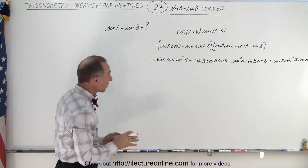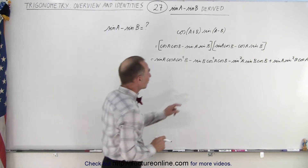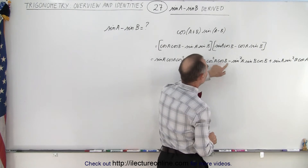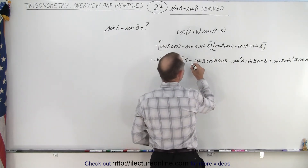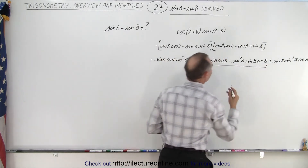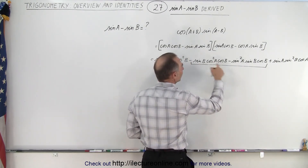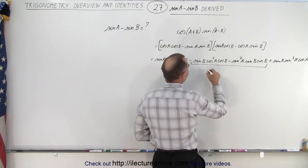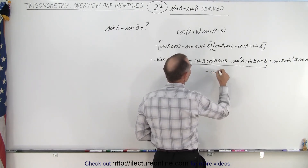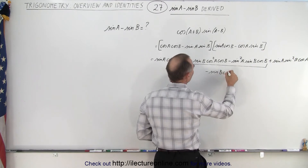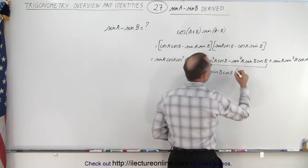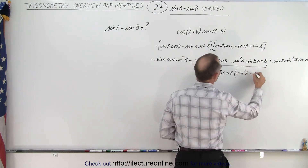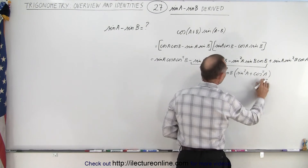Now we're looking for common factors in these terms. We have sine squared a, cosine squared a, sine b cosine b, sine b cosine b. Notice these two terms contain the same factor of sine b cosine b, so I can factor that out — giving us minus sine b cosine b. We have left sine squared a plus cosine squared a, which of course equals 1.